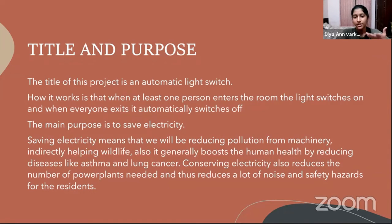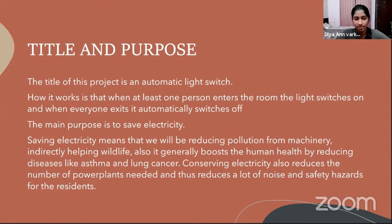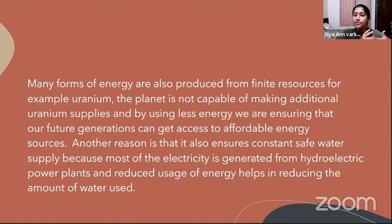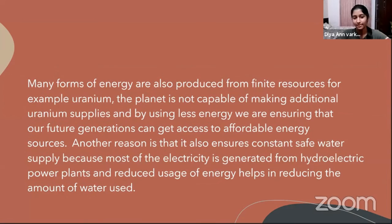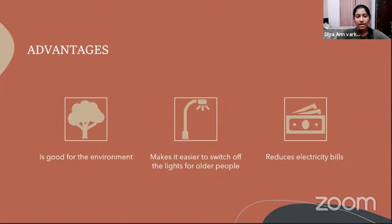Saving electricity means reducing pollution from machinery, indirectly helping wildlife. It generally boosts human health by reducing diseases like asthma and lung cancer. Conserving electricity also reduces the number of power plants needed, thus reducing noise and safety hazards for residents. Many forms of energy are produced from finite resources — for example, uranium, which the planet cannot produce more of — so by using less energy we ensure future generations have access to affordable energy. It also ensures constant safe water supply, as most electricity is generated from hydroelectric power plants and reduced usage helps reduce water consumption.